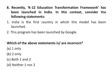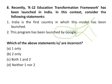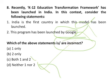Question number 8 is about the K-12 Education Transformation Framework launched in India. The first statement says India is the first country where this model has been launched — this is wrong, as the model has been adopted by over 50 countries. The second says this program is launched by Google — this is also wrong, as it is a Microsoft program. Both statements are incorrect, so C is the correct answer. Microsoft launched its K-12 educational transformation framework to facilitate comprehensive digital transformation of schools in India. The framework comprises four pillars: leadership and policy, modern teaching and learning, intelligent environment, and technology.